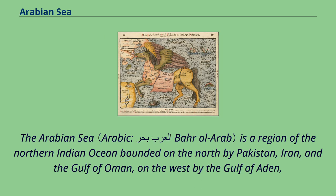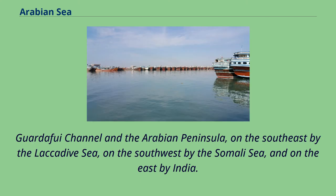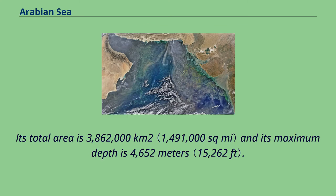The Arabian Sea is a region of the northern Indian Ocean bounded on the north by Pakistan, Iran, and the Gulf of Oman; on the west by the Gulf of Aden; on the northwest by the Gardafui Channel and the Arabian Peninsula; on the southeast by the Lakshadive Sea; on the southwest by the Somali Sea; and on the east by India. Its total area is 3,862,000 square kilometers and its maximum depth is 4,652 meters.